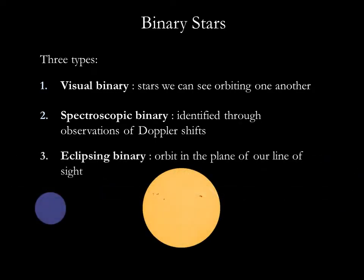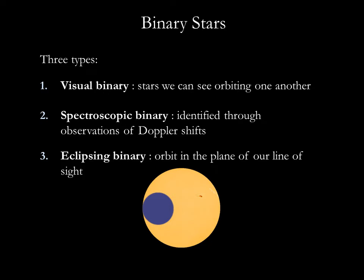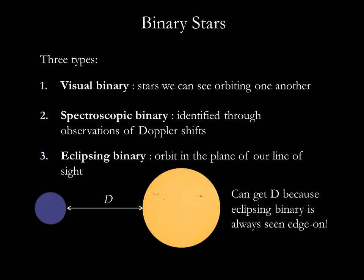An eclipsing binary is a pair of stars that orbit in the plane of our line of sight. When neither star is eclipsed, we see the combined light of both stars. When one star eclipses the other, the apparent brightness of the system drops because some of the light is blocked from our view. Eclipsing binary systems are useful because they allow us to accurately measure the orbital distance d. This is challenging in any other type of binary system because we don't know the tilt of the orbit. We can get d here because an eclipsing binary system is always seen edge-on.